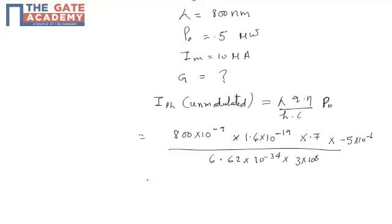So, P naught is 0.5 times 10 raised to power minus 6. So, from this I will get the value of Iph unmodulated. This is equivalent to 0.225 microamperes.